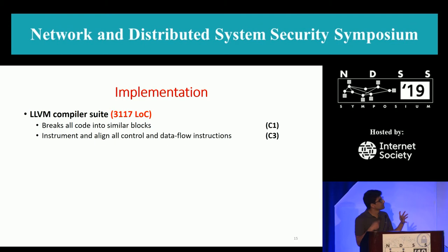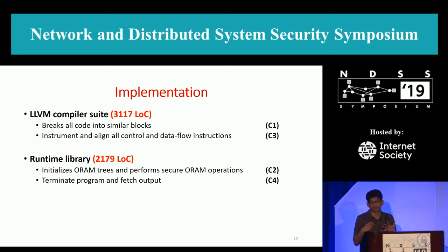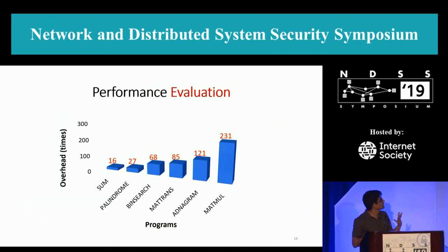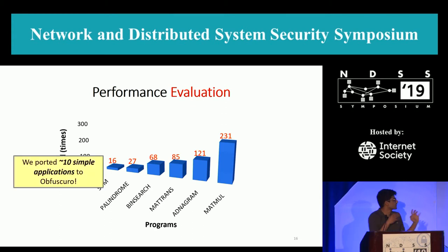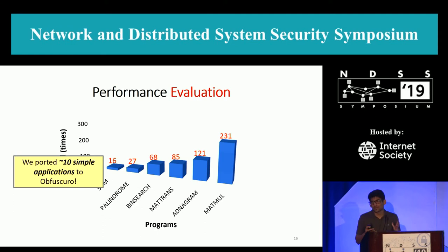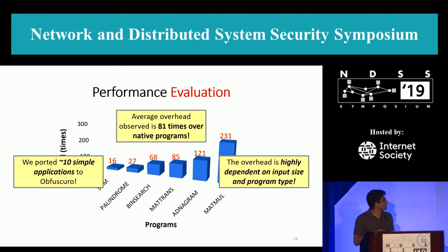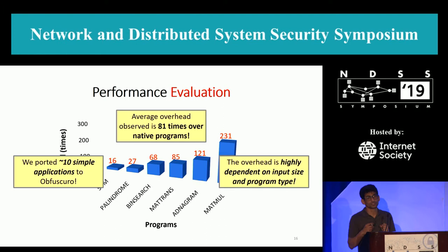The implementation is threefold: an LLVM compiler suite that breaks and instruments the code, a runtime library that initializes the ORAM and terminates the program, and some modifications to the SDK to create extra memory regions. For performance evaluation, we ported 10 simple applications to Obscuro — palindrome, binary search, matrix transpose, et cetera. The overhead is high because we're using ORAM, but that's expected given the strong guarantees provided. The average overhead is 81 times over the native program, but this is still much faster than existing cryptographic solutions. The overhead is highly dependent on input size and the program run.